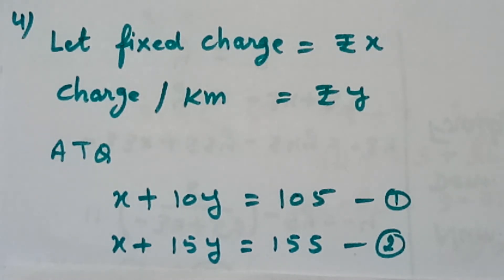Here in this question, it is given that taxi fare of a city consists of fixed charge and charge per km. A person traveling 10 km paid Rs. 105 and for a journey of 15 km, he has paid Rs. 155. We need to find the fixed charge and the charge per km.